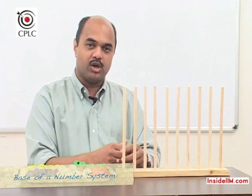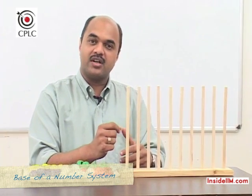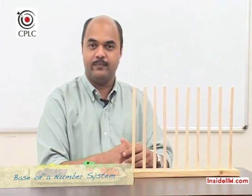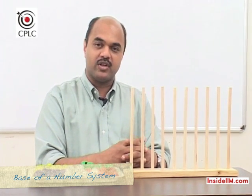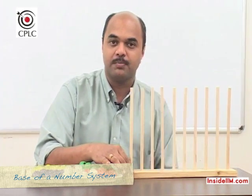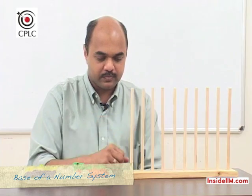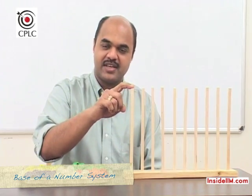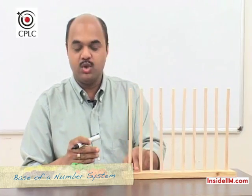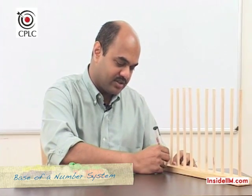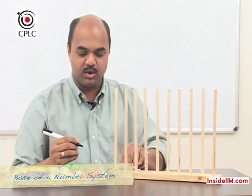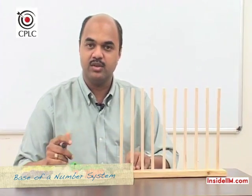Why base 10? Because we use 10 digits in this number system, which are digits from 0 to 9. So effectively, the base of a number system refers to the number of digits used by the number system. Suppose this particular column is the units digit, and hence we write this down as 10 raised to 0, which is how we get the units digit.